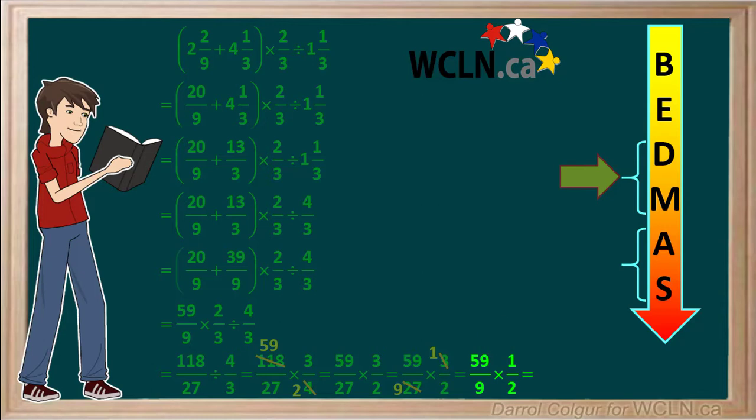We just multiply these two fractions. 59 times 1 is 59, and 9 times 2 is 18. So the product is 59 over 18.